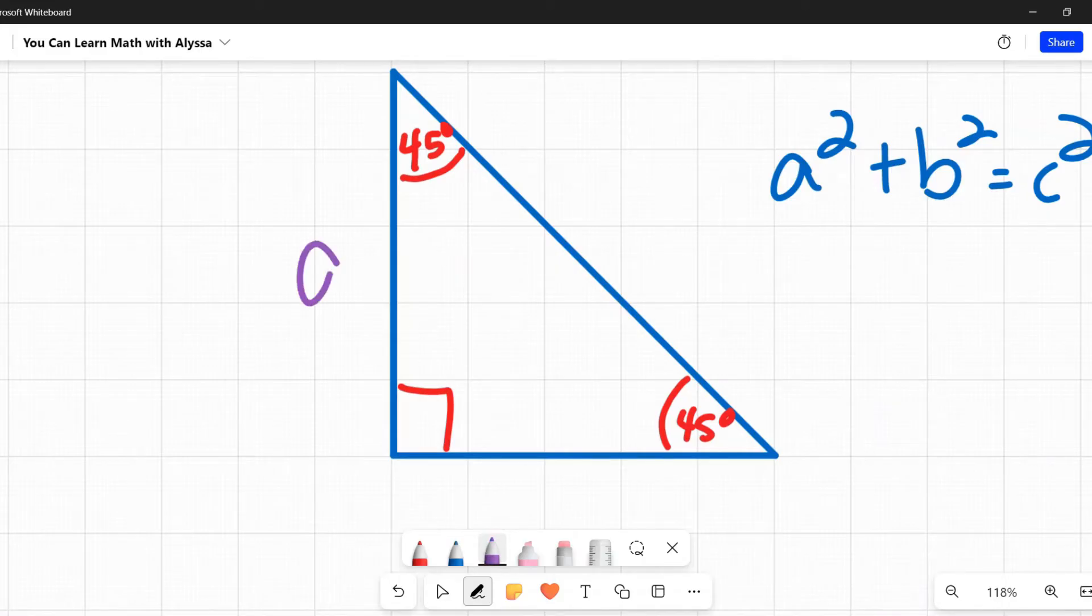It says that if one of the legs (these are the two legs of the right triangle) is a number we're going to call 'a', then the other leg is also 'a', and the hypotenuse will be that number a times the square root of two.